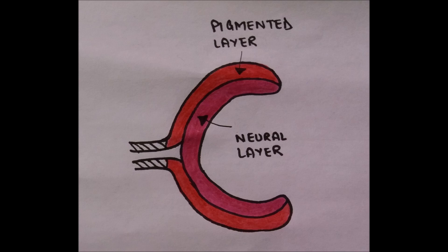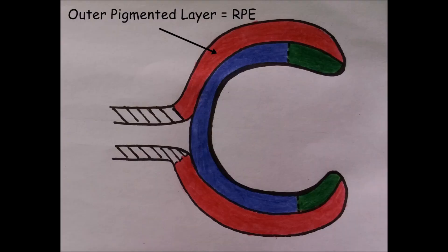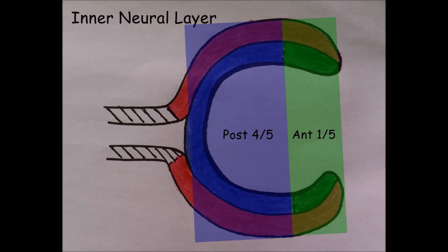Soon, the two layers oppose each other and the intra-retinal space disappears. The outer pigmented layer forms retinal pigmented epithelium while the inner neural layer is divided into posterior four-fifths and anterior one-fifth.